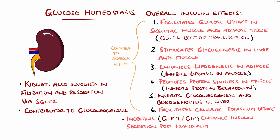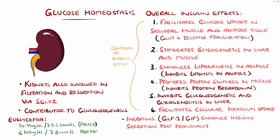In a healthy state, euglycemia is maintained through this dynamic system, with normal values being 70–99 mg per deciliter, or 3.9–5.5 mmol per litre, fasted, or postprandially generally not exceeding 140 mg per deciliter, which is 7.8 mmol per litre.